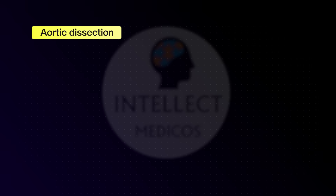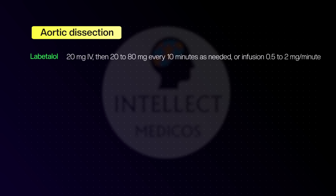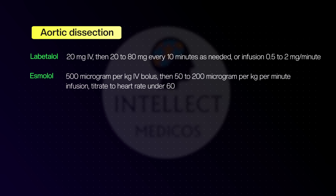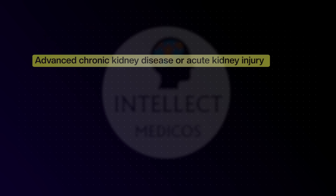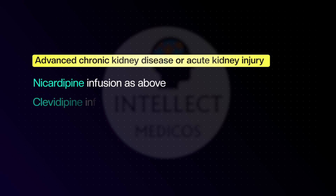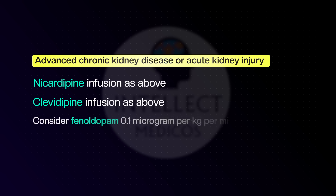For aortic dissection — whether type A or type B — the first-line drug is labetalol: 20 mg IV, then 20 to 80 mg every 10 minutes as needed, or start an infusion. Alternatives include esmolol or nicardipine/clevidipine. Avoid hydralazine and any pure vasodilator before beta blockade. For acute kidney injury, preferred agents are nicardipine, clevidipine, or consider fenoldopam.